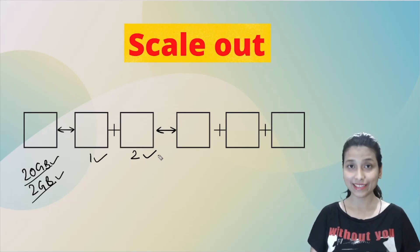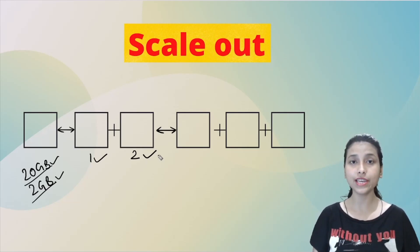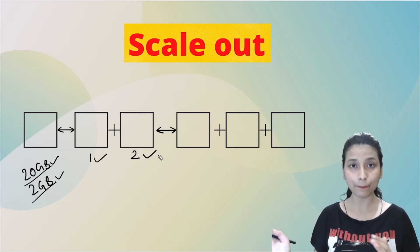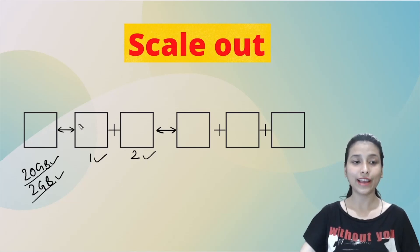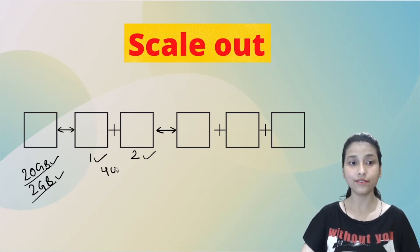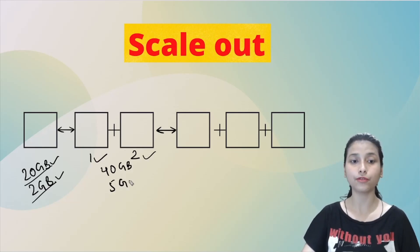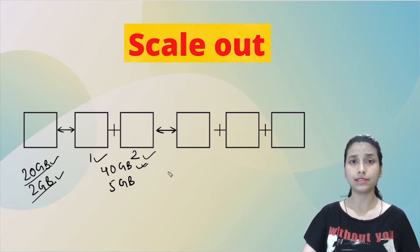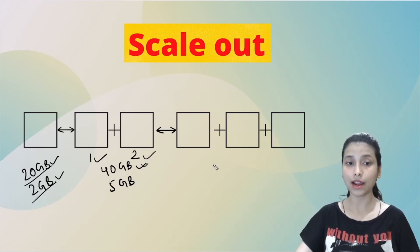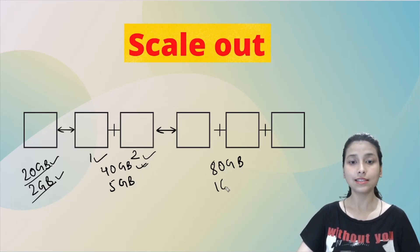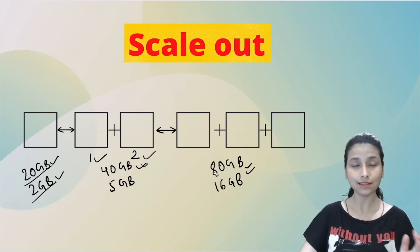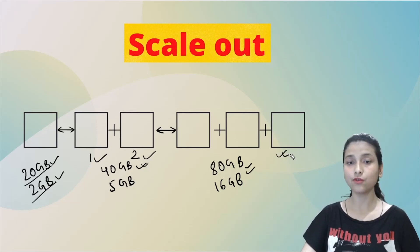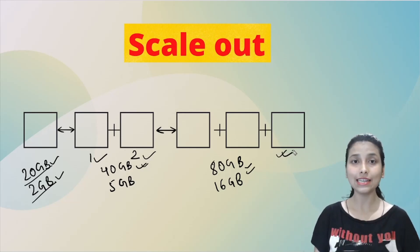There is no requirement to transfer the dataset from the first system to the second system. Whatever new volume of data is generated, we can accommodate it by combining a new system with the previous one. When I needed 40 GB disk and 5 GB RAM, I just attached one new system. Then when my requirement changed again to 80 GB disk and 16 GB RAM, I simply add another extra system to the existing ones.